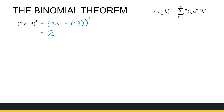Then we can use the binomial theorem, which says that's the sum when r goes from 0 to 4 of 4Cr times (2x)^(4-r) times (-3)^r. When we look at (-3)^r we need to be careful with that minus, because it can cause trouble sometimes.